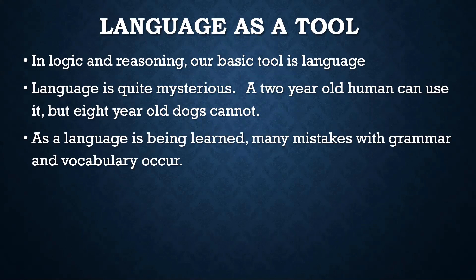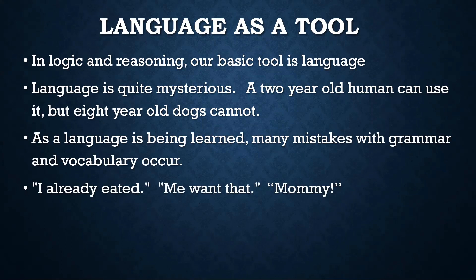As language is being learned, there are typically many mistakes with both grammar and vocabulary. For example, a toddler may say something like 'I already ed-ed,' not learning how to create past tense, but using a general rule that you add 'ed' to the end of a verb to make it past tense — which obviously doesn't work all the time. Or saying things like 'me want that,' not understanding the distinction between an object and a subject, and using the term 'mommy' as a generic term for women in general, much to the consternation of the toddler's actual mom.